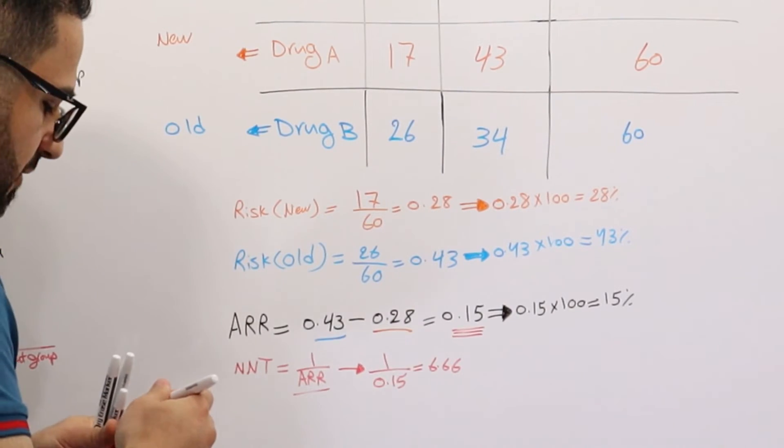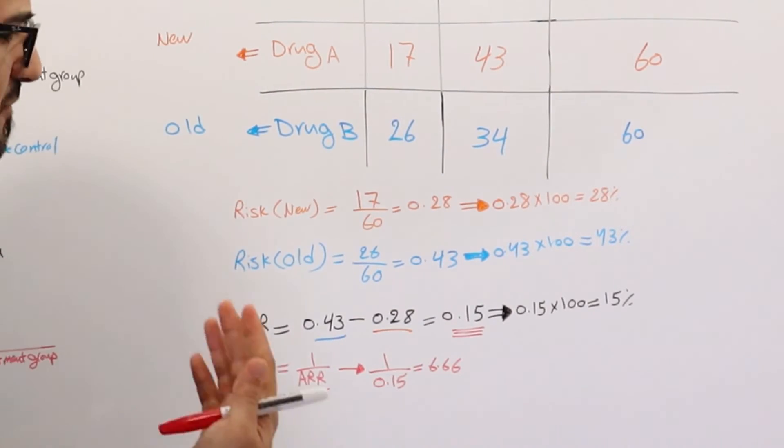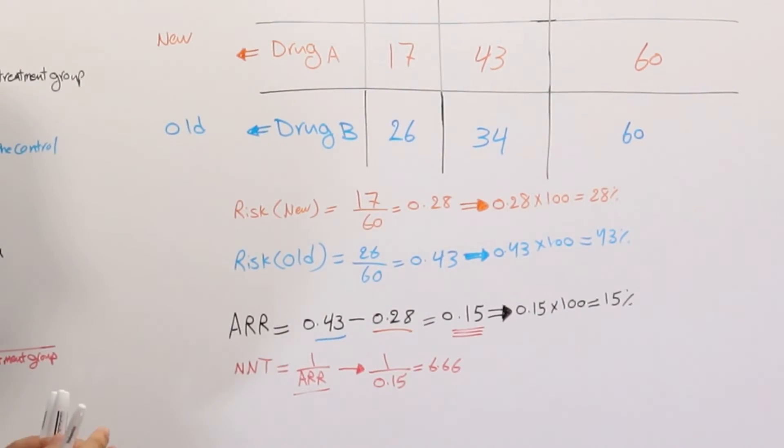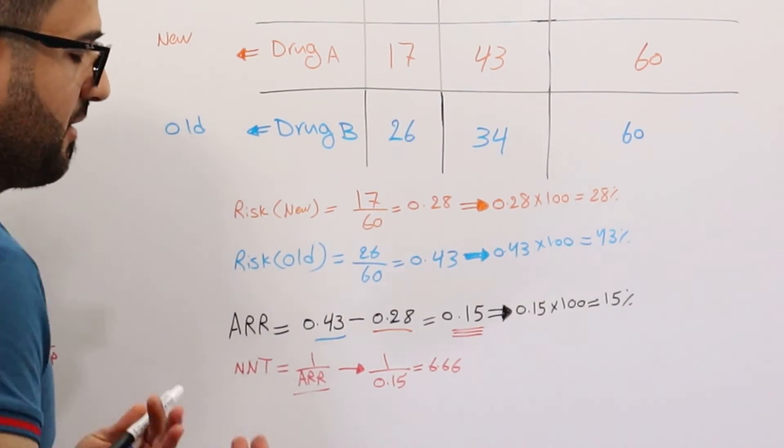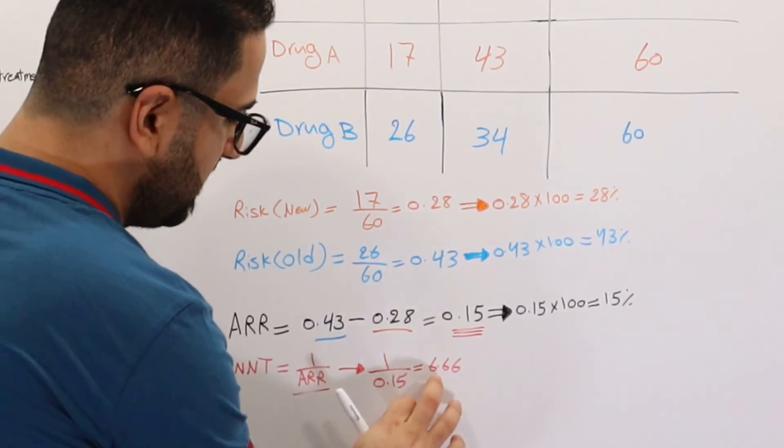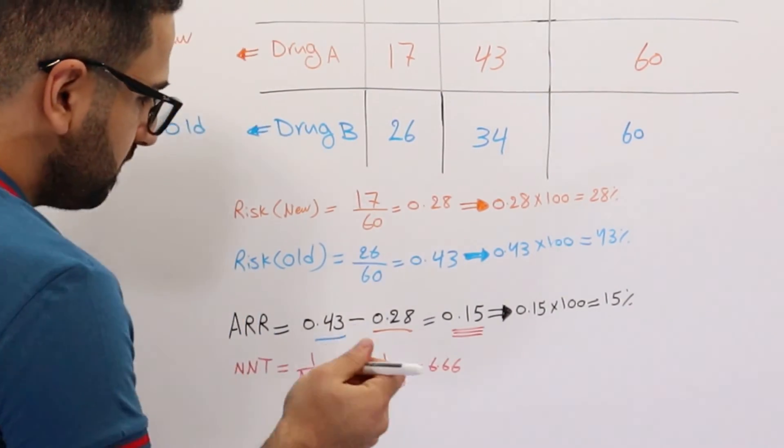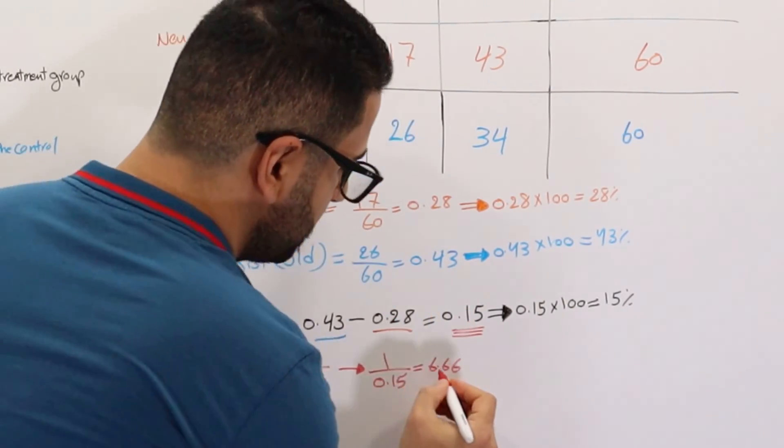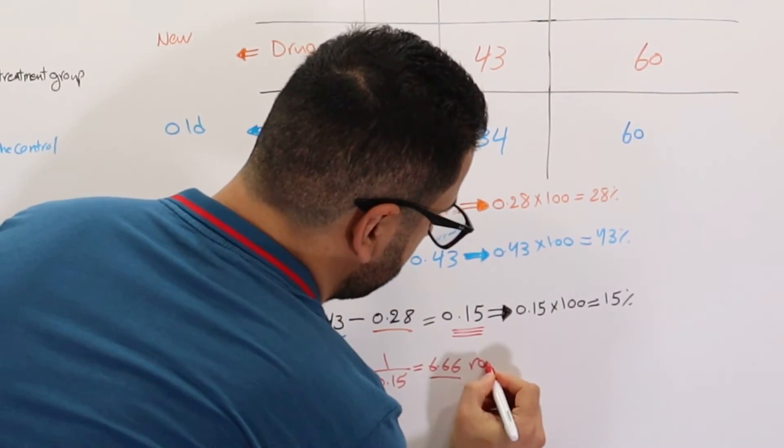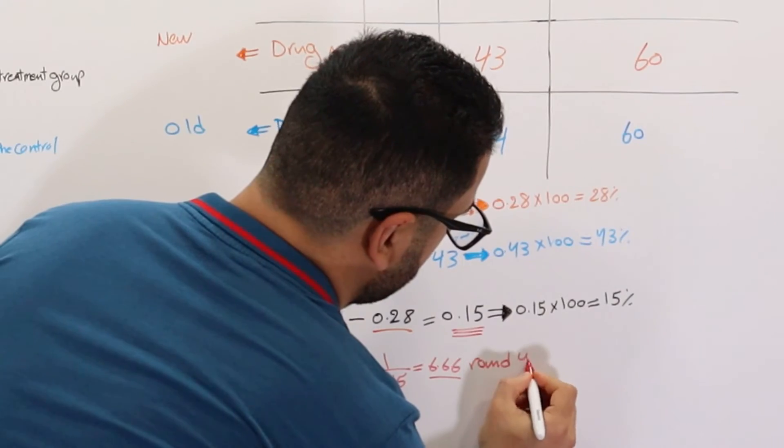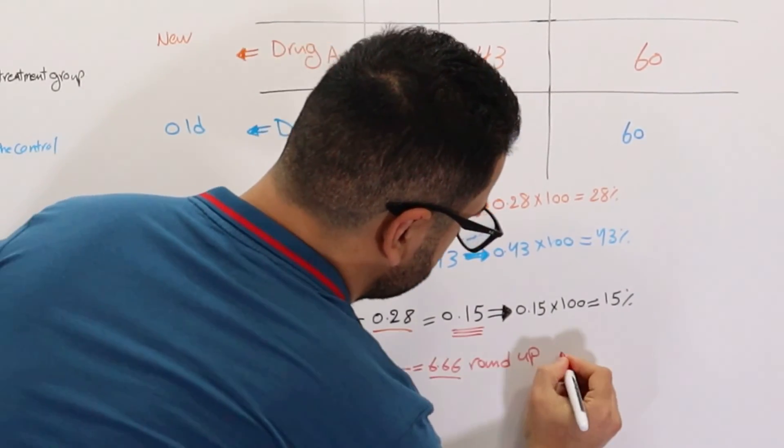So whenever we have number needed to treat, and remember, if you're studying for an examination or if you're reading an article, whenever you see a decimal place after the whole number, what are we going to do? We're going to always round up. So we're going to round up. So this is going to be 7.